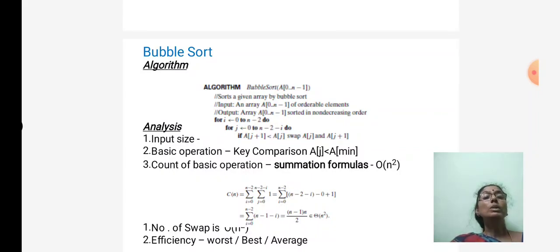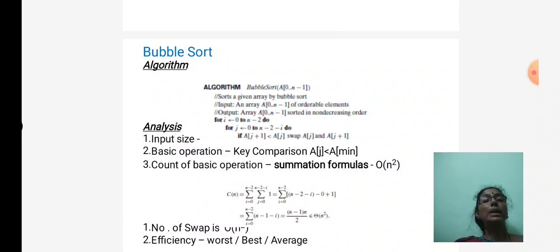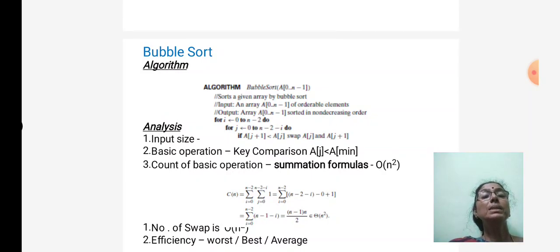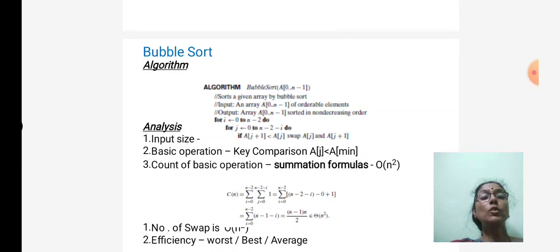In the algorithm, we have two for loops with input and output defined. The input is the given array list and the output is the sorted array. The i for loop runs from 0 to n minus 2, and the j for loop runs n minus 2 minus i times. In the analysis of algorithms, the first step is to find the input size, which here is n. The second step is to identify the basic operation — in bubble sort, it is the comparison of two elements.